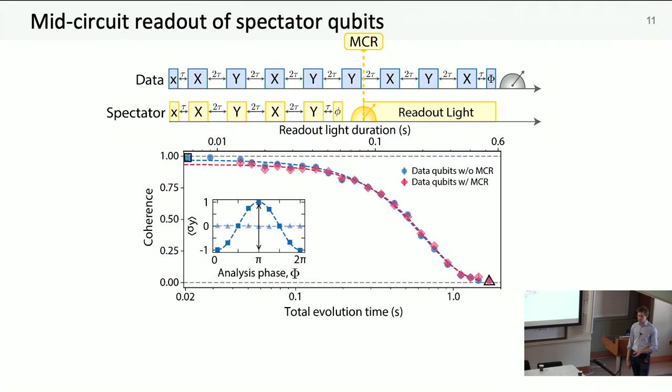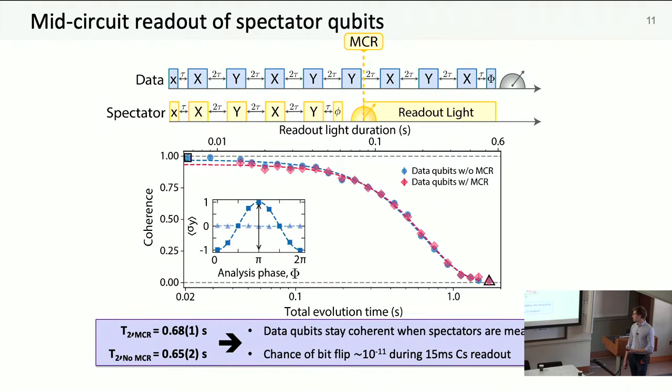The really key message here is that these two curves overlap. Even though we're shining hundreds of milliseconds of readout light on the data qubits, there is no additional decoherence. This far separation of the wavelengths basically gives us extremely low crosstalk measurements. You can do a calculation of the expected bit flip rate on a rubidium atom during a 15 millisecond cesium readout, and it's one in 10 to the 11 events. Perhaps not so surprising, but seeing it work was a pretty important first step.